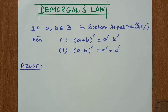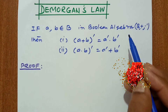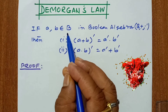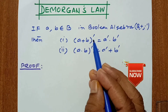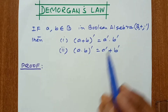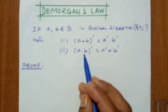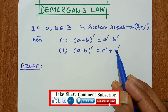De Morgan's law — a very important law in discrete mathematics. In Boolean algebra, if (B, +, ·, ') is a Boolean algebra and a, b belong to B, then the first law states: (a + b)' = a' · b', and the second law states: (a · b)' = a' + b'.